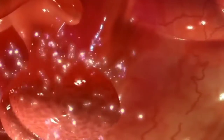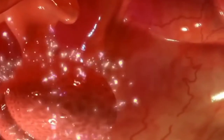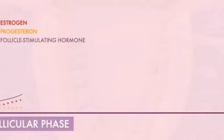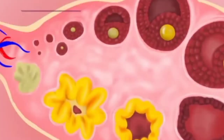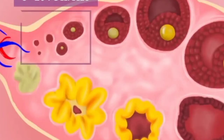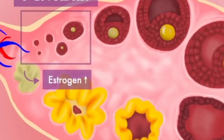Around this time, the pituitary gland begins sending follicle-stimulating hormone to your ovaries, stimulating the development of 5 to 20 follicles in the ovaries. Each follicle contains an immature egg and produces estrogen. One follicle soon begins to grow faster than the others, and this is called the dominant follicle.